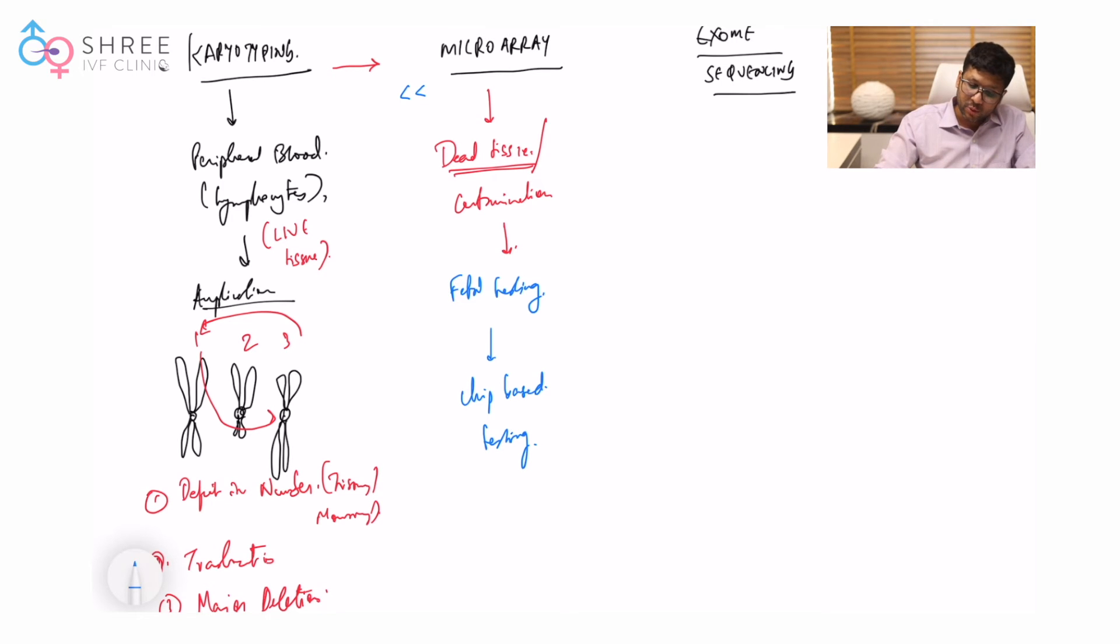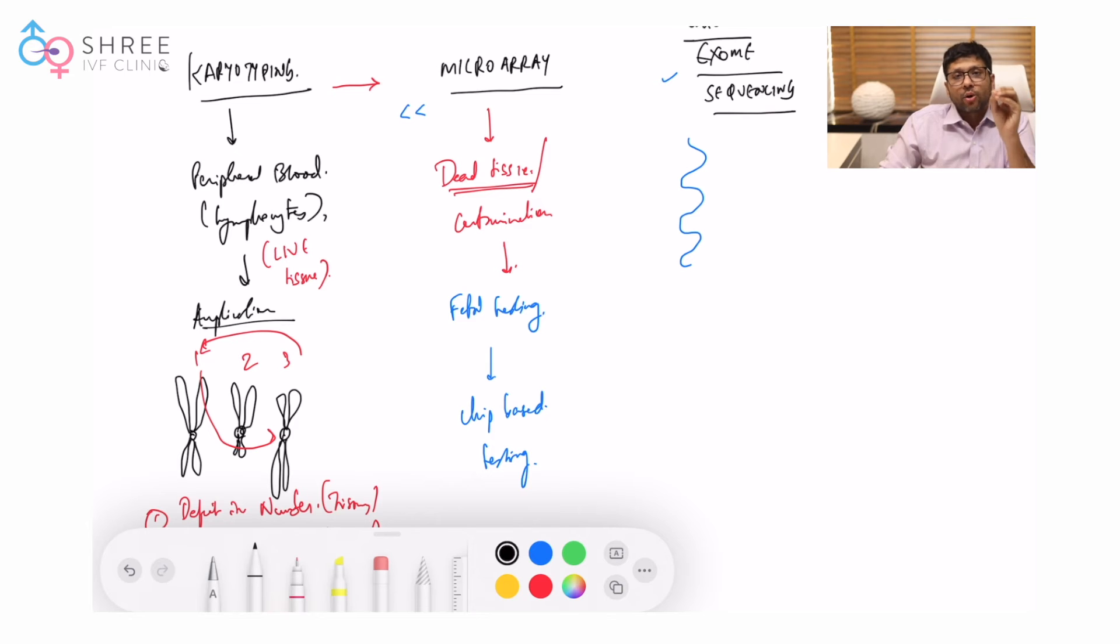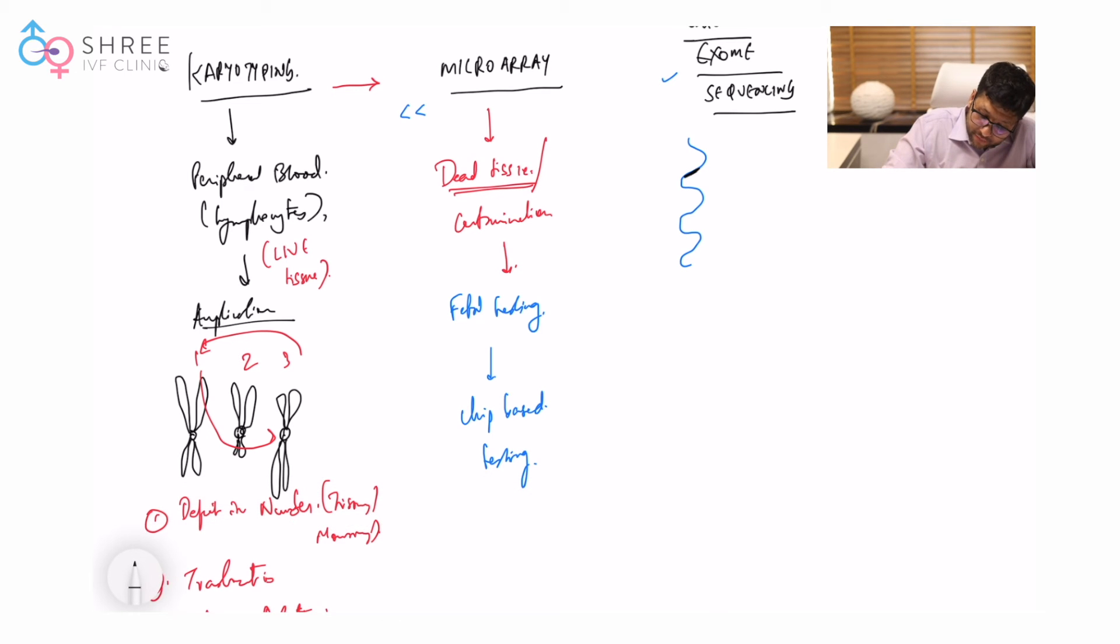Now we come to whole exome sequencing and whole genome sequencing. When I draw a DNA, inside this DNA you have certain parts only which are coding for genes. For example, if I draw this DNA, there is one part number one which codes for a gene, part number two codes for a gene. Follow this carefully - the gene coding region is actually called as exome.